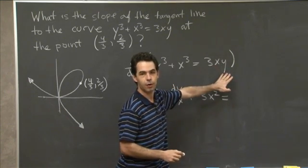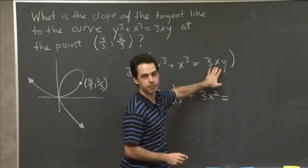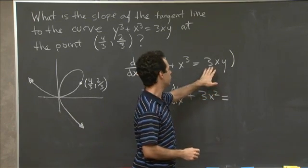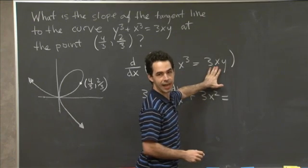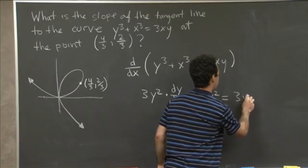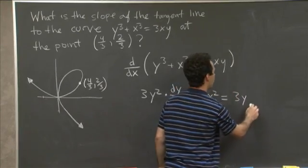And so we take the derivative of xy, so we take the derivative of the first times the second, plus the derivative of the second times the first. So the derivative of the first is just x, sorry, x is the first. So its derivative is 1. So we get 3 times the second is y.